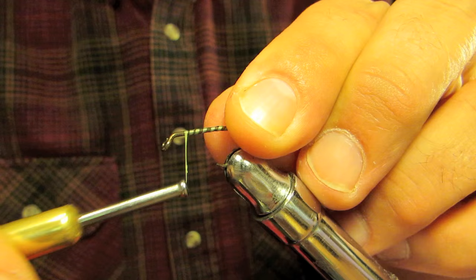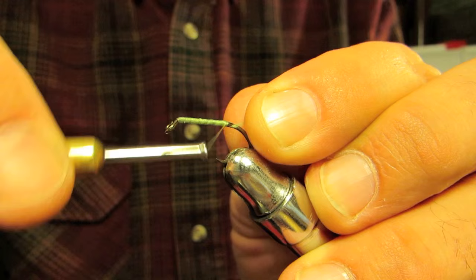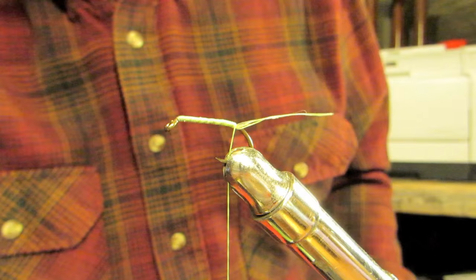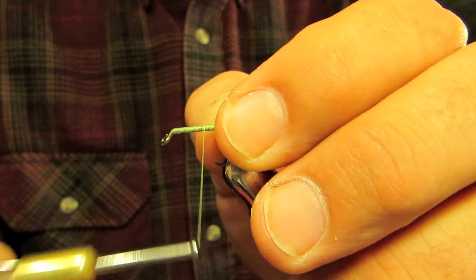You probably want to use a thin wire hook and a better quality hook than what I'm using. I use these old Eagle Claw. You get a whole box of them, about 500 of them for five bucks. They're cheap, but they work for my purposes. I tie a lot of flies and most of them are relatively low value flies.